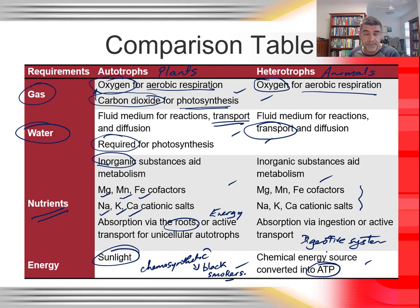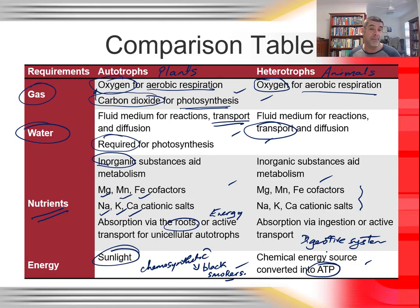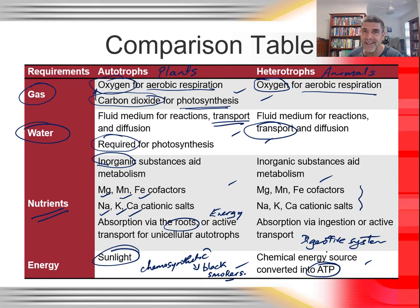Comparison tables are a really nice way of giving you a good overview of the key things to remember when comparing autotrophs and heterotrophs in terms of their gas and nutrient requirements. Thanks for watching.